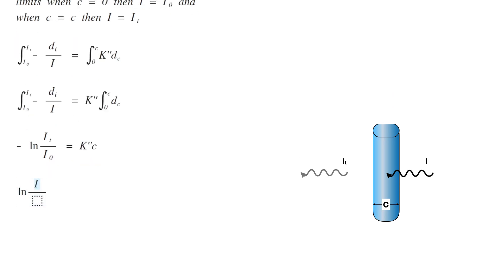Now, we can invert IT by I0 and we can remove the negative sign. Therefore, ln of I0 by IT equals K double dash C.